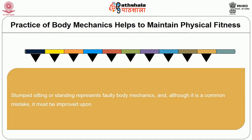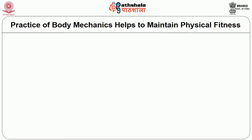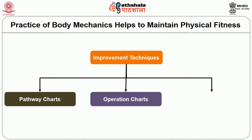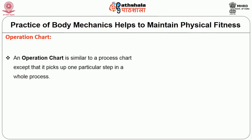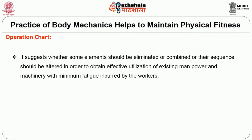Slumped sitting or standing represents faulty body mechanics and must be improved upon. If both head and shoulders remain erect and balanced throughout the day regardless of the activity being performed, the chance of future back pain is lessened. There are three main improvement techniques: the pathway chart or flow diagram, the operation chart, and the process chart. An operation chart is similar to the process chart except that it picks up a particular step in a whole process. Operation analysis is a detailed study of different operations involved in doing a work to investigate shortcomings of the existing method and develop an improved procedure.